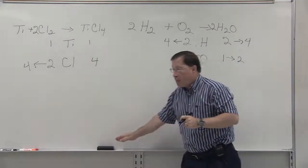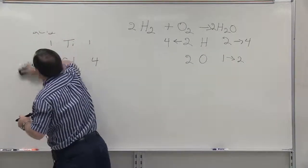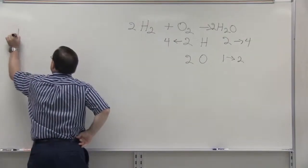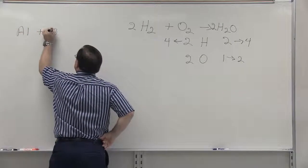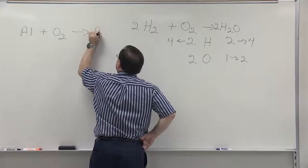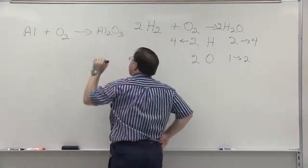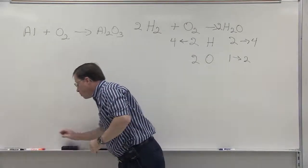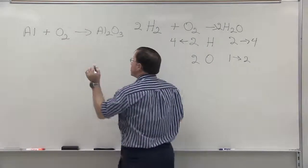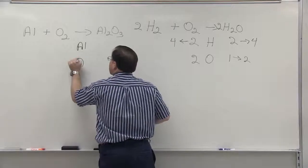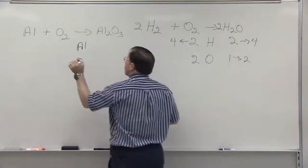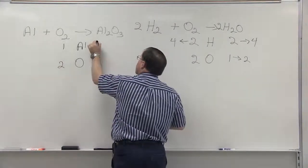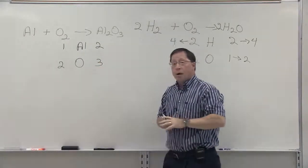There are some other helpful hints that may benefit you when balancing equations. Suppose we have aluminum plus oxygen giving us aluminum oxide. When we balance this equation, we find that we have one aluminum and two oxygens on the left-hand side. We have two aluminums and three oxygens on the right-hand side.